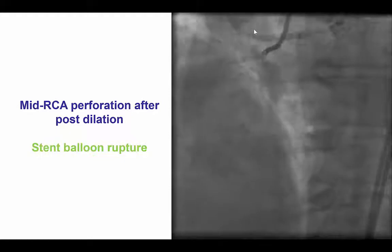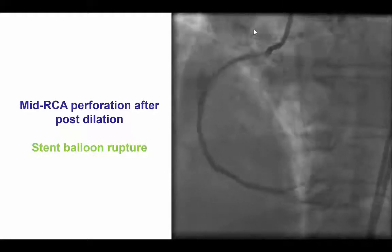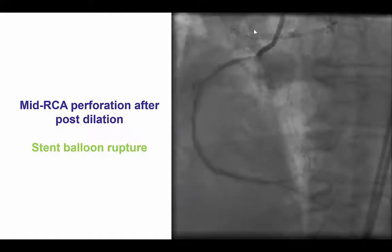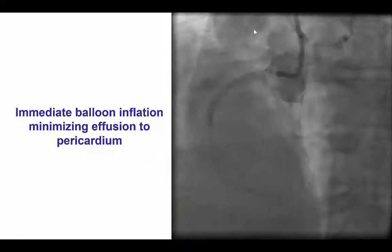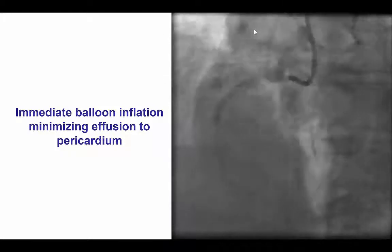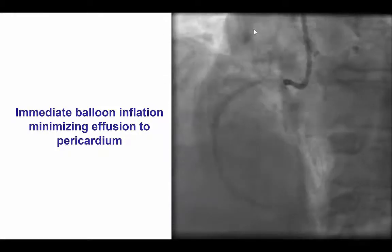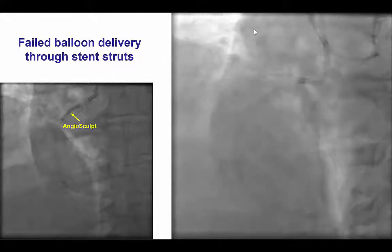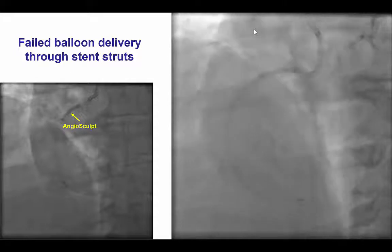However, after post-dilation, there was a perforation in the mid-right coronary artery, which occurred after a balloon ruptured during the post-dilation. Like every perforation, we inflated a balloon to seal the perforation and prevent the formation of a pericardial effusion, and then we did multiple attempts to deliver covered stents which were unsuccessful, likely because of under-expansion of the stents proximally due to the previous stents as well as calcification.